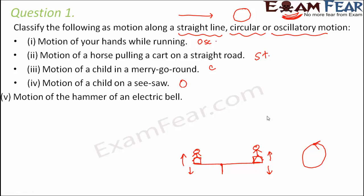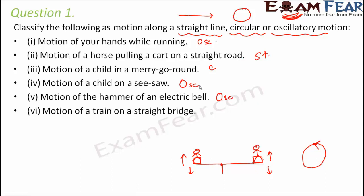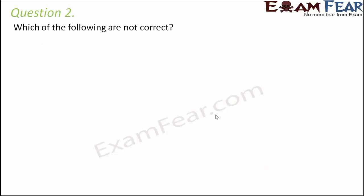Motion of the hammer of an electric bell: when you push the bell, the hammer starts vibrating, and vibration is a type of oscillatory motion, so this is oscillatory motion. Motion of a train on a straight bridge: since the bridge is straight, the train also moves on a straight path, so it is straight-line motion.